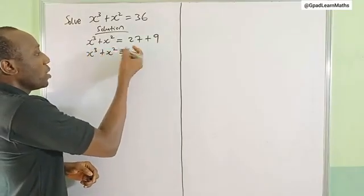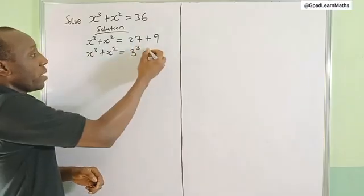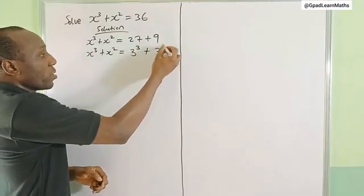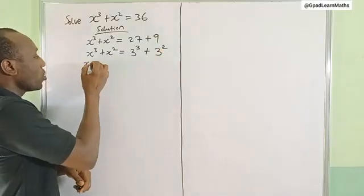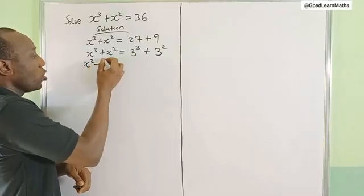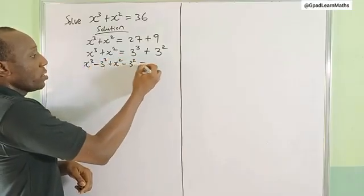Then plus 9 is what, 3². So let's bring this to the left hand side to meet x here. So that's x³ - 3³ plus x² - 3², which is equal to 0.